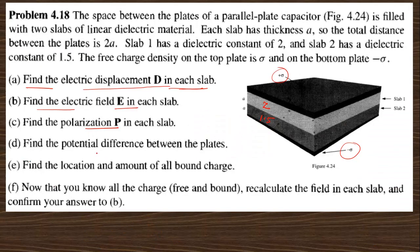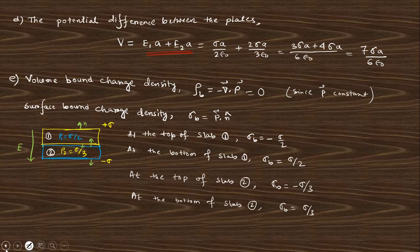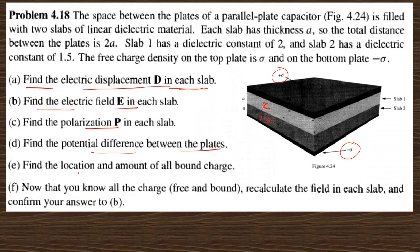The next question asks to find the potential difference between the plates. To find the potential difference, use V = E * distance. There are two electric fields, E1 and E2, for slab 1 and slab 2 respectively. The total potential difference is obtained by summing the contributions from both slabs.